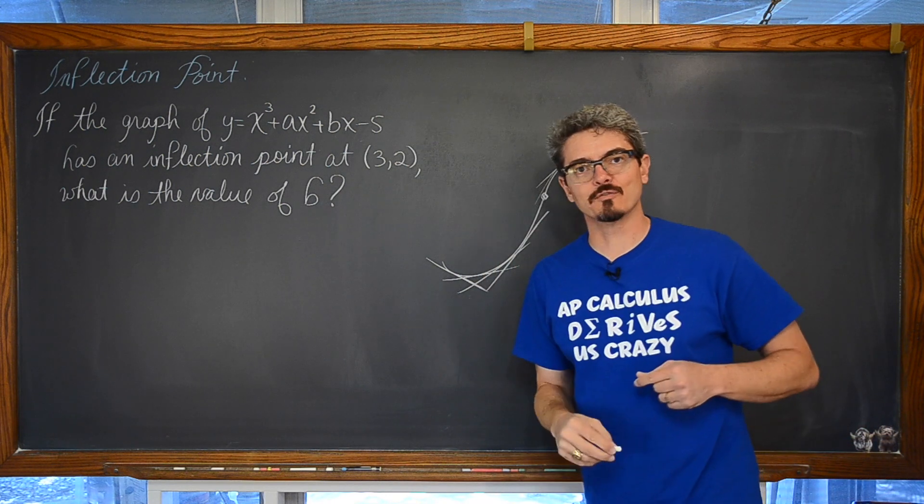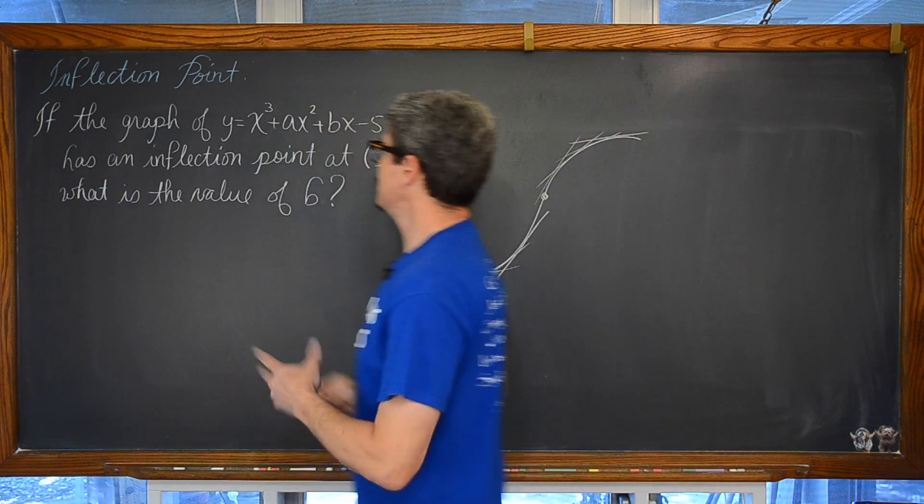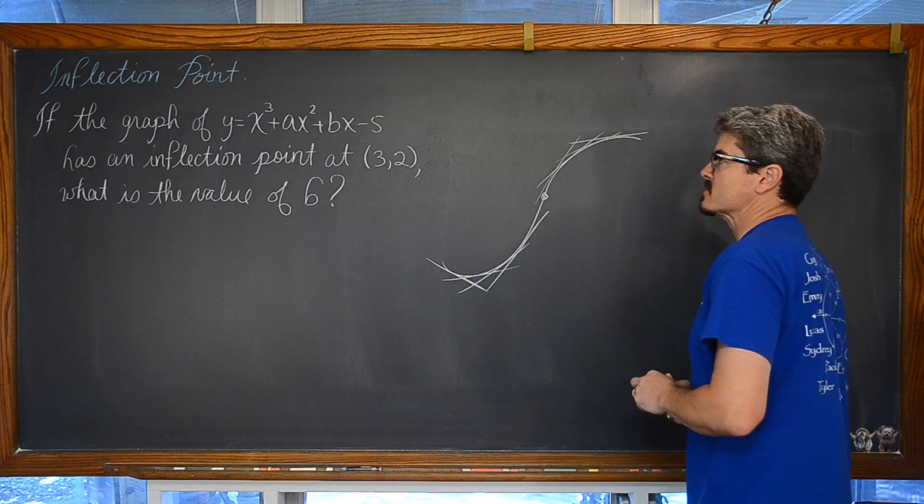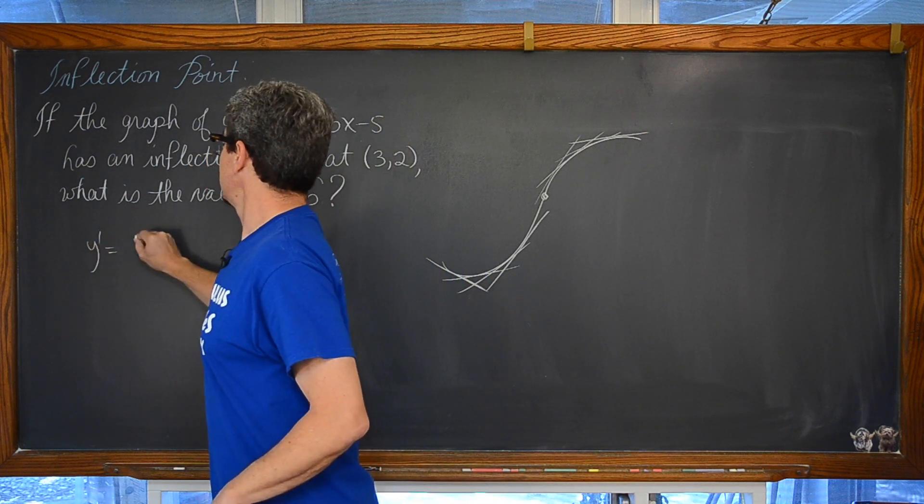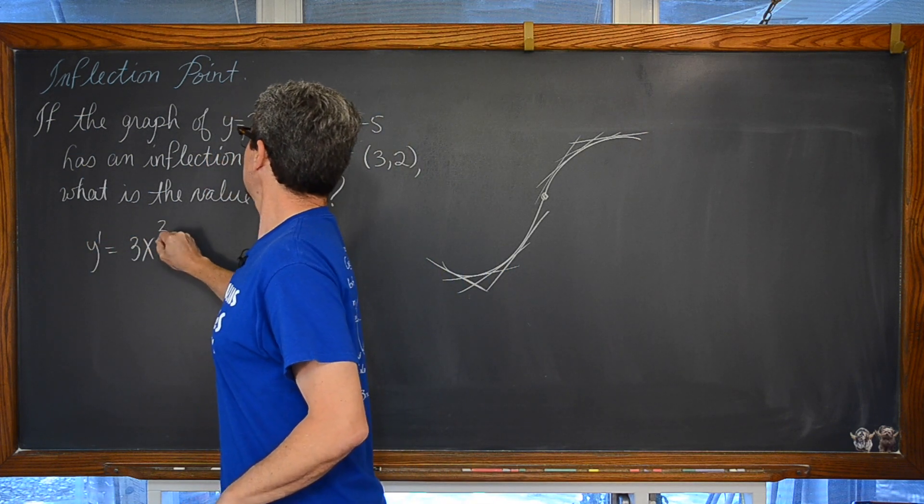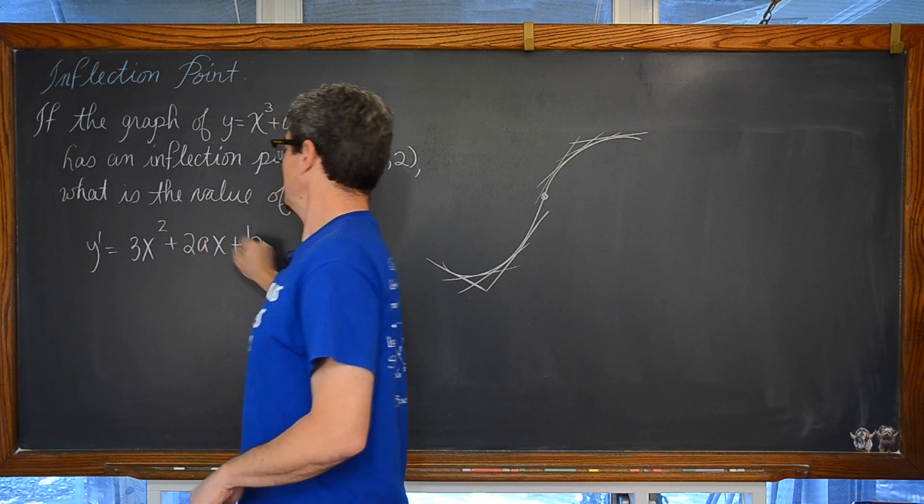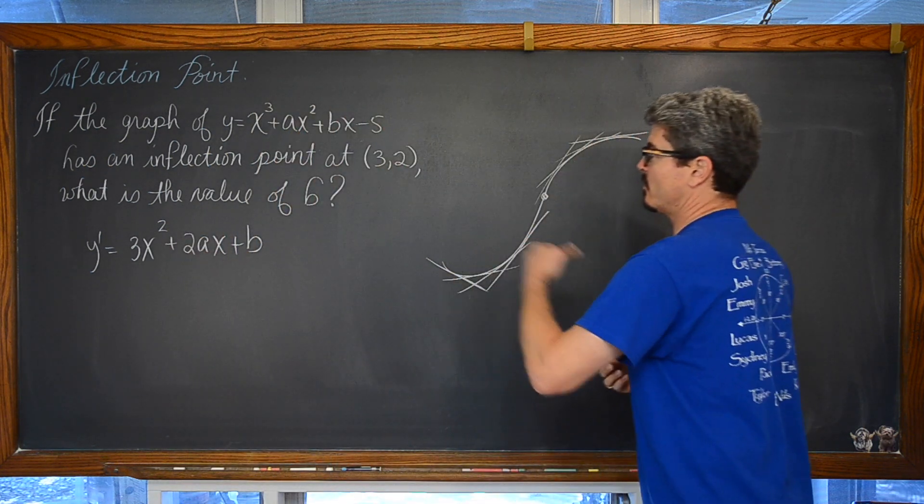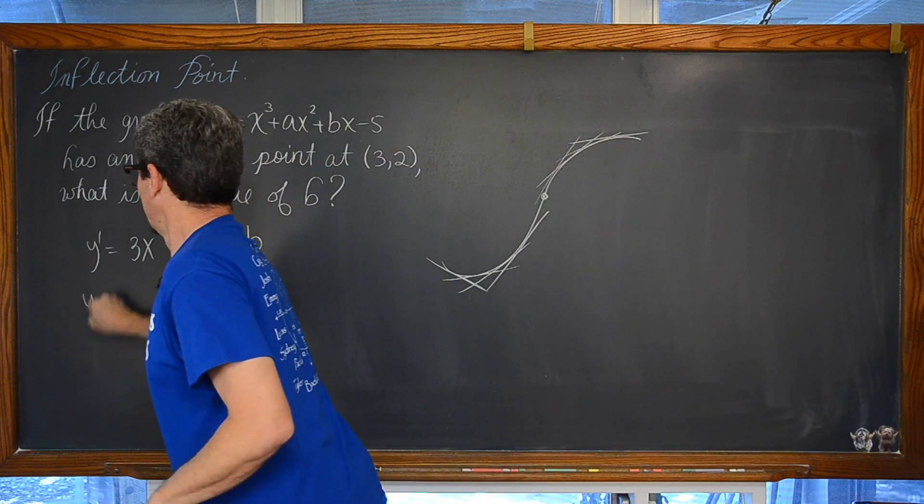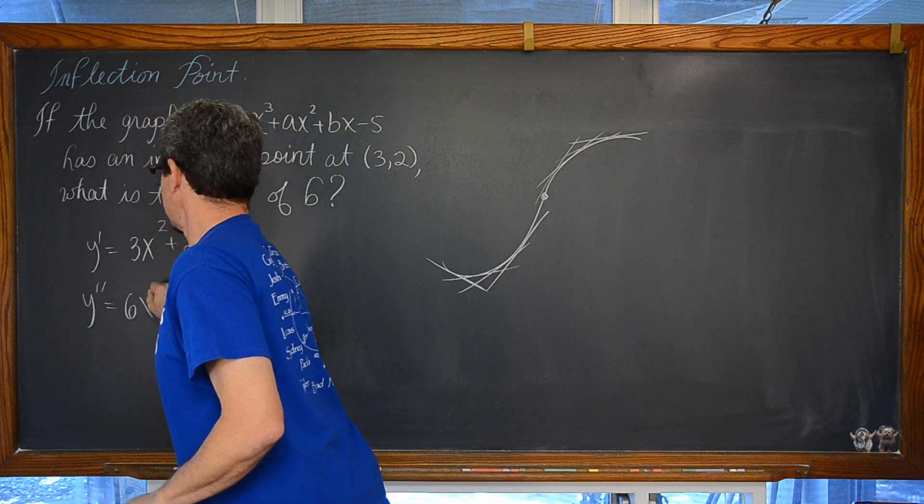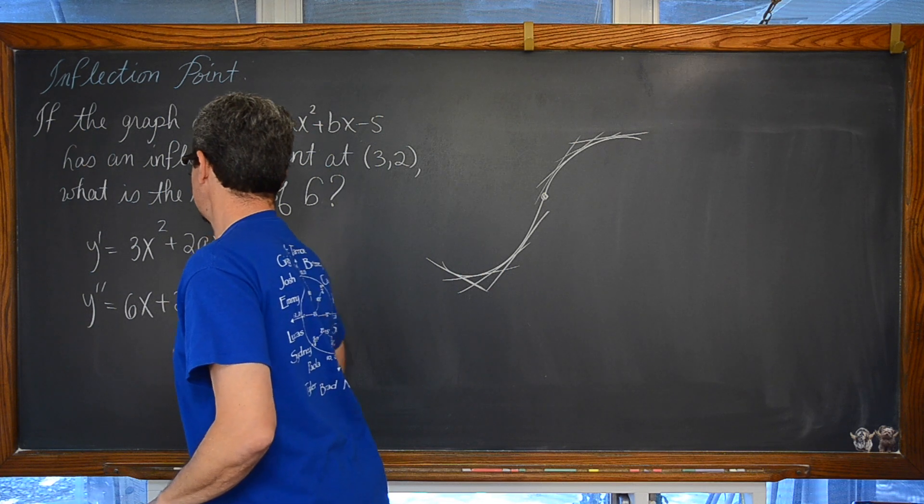So if y equals this polynomial x cubed plus ax squared plus bx minus 5, well then we know that y prime is equal to 3x squared plus 2ax plus b, just using some power rules there with that polynomial. Then y double prime is equal to 6x plus 2a.